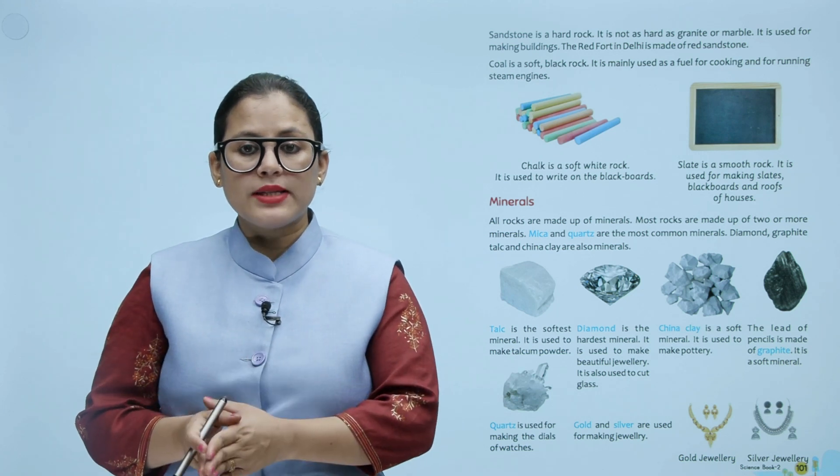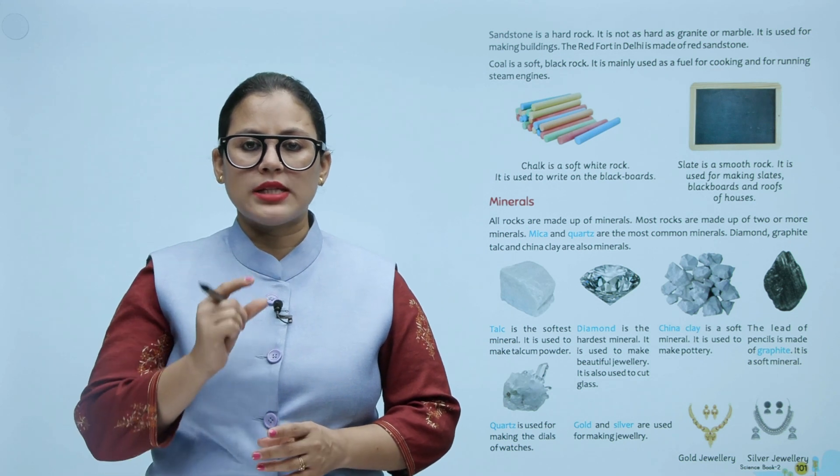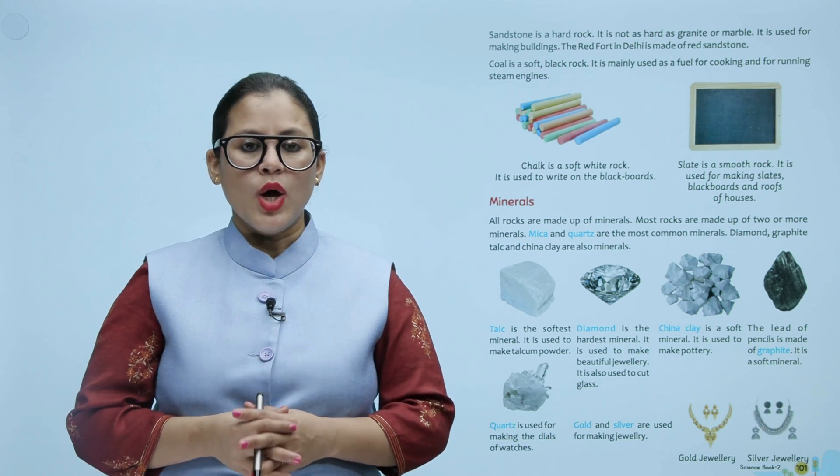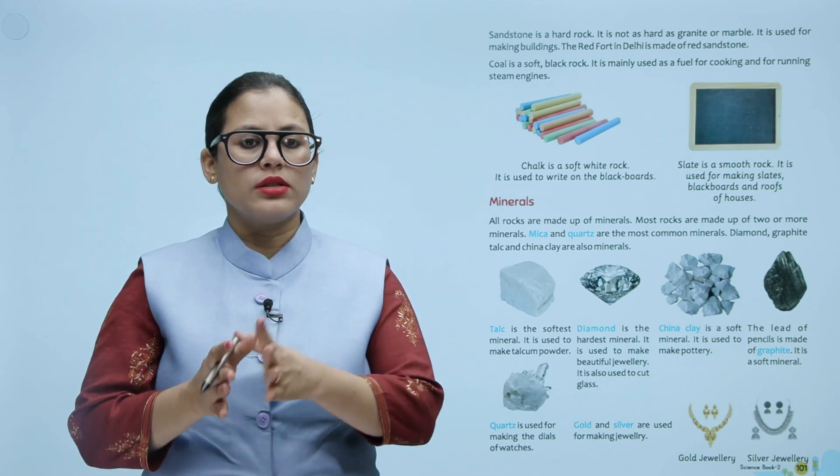China clay is a soft mineral. It is used to make pottery. Pottery ke liye china clay use kiya jata hai. The lead of a pencil is made of graphite — it is a soft mineral. Isi tarah se pencil ka woh black color ki lead graphite se bani hoti hai. Quartz is used for making the dials of watches. Watch ke jo dials hoti hain, woh quartz se bani hoti hain. Gold and silver are used for making jewelry. Isi tarah se gold aur silver ka use kiya jata hai jewelry banane ke liye.